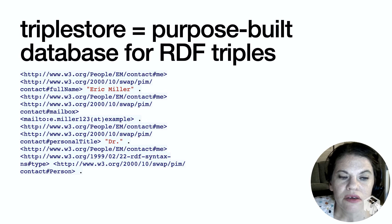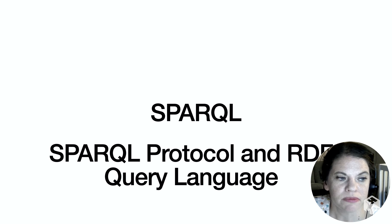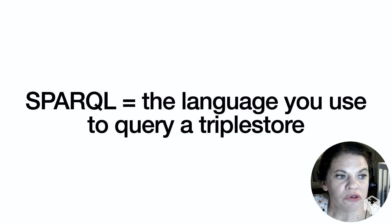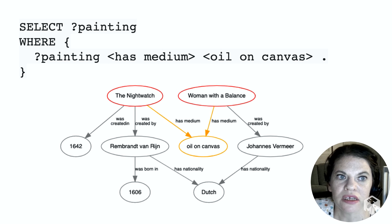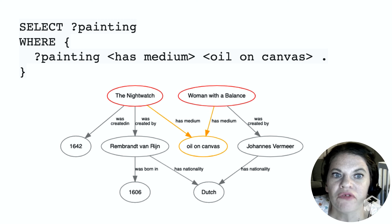In order for a database to be useful we need to be able to ask it questions. The language we use to query triple stores is called SPARQL, which apparently stands for SPARQL Protocol and RDF Query Language — but everyone just says SPARQL. Just like SQL is the language you use to query a relational database, SPARQL is the language you use to query a triple store. SPARQL queries work something like this: you look for all the paintings and then narrow in on only those paintings created in oil. The query moves along the graph until it locates only those entities that have been specified, and because the queries are computerized they traverse the graph really, really quickly.